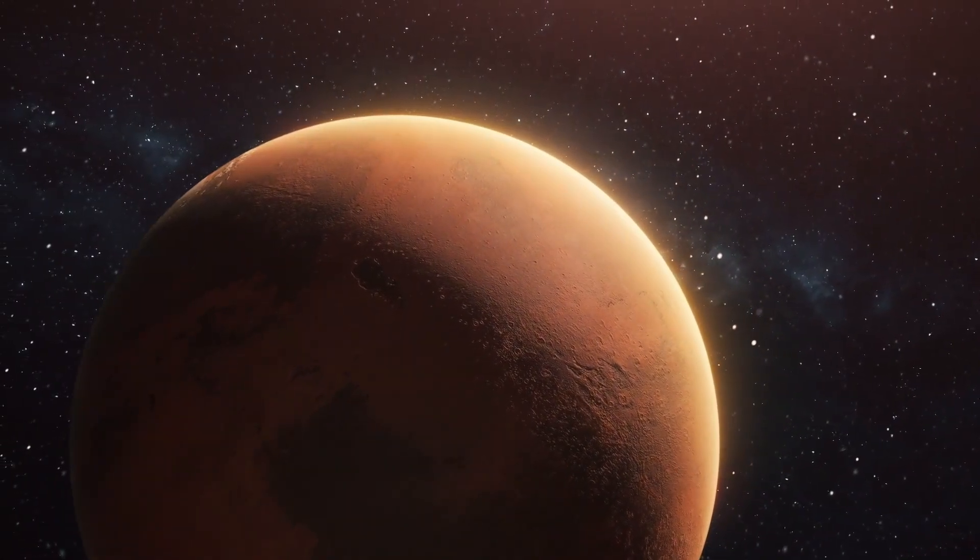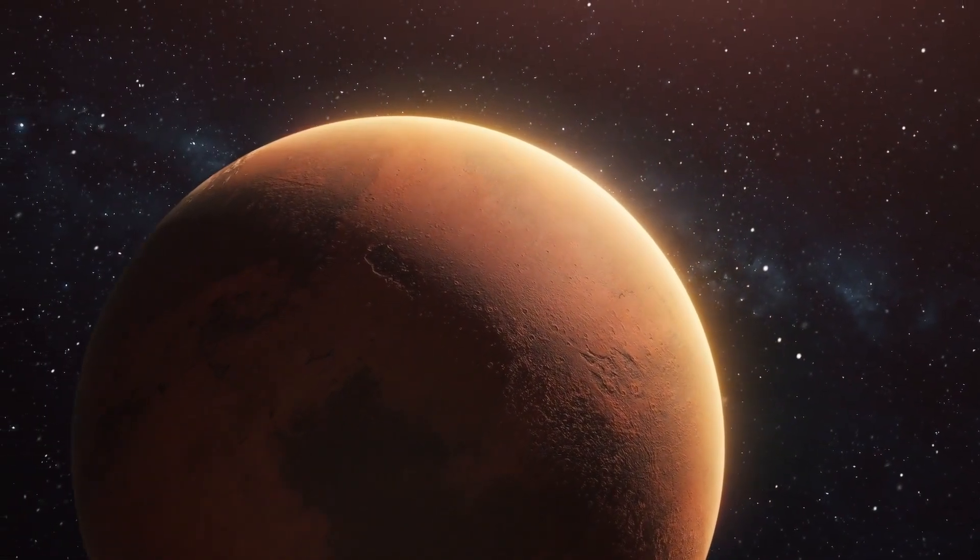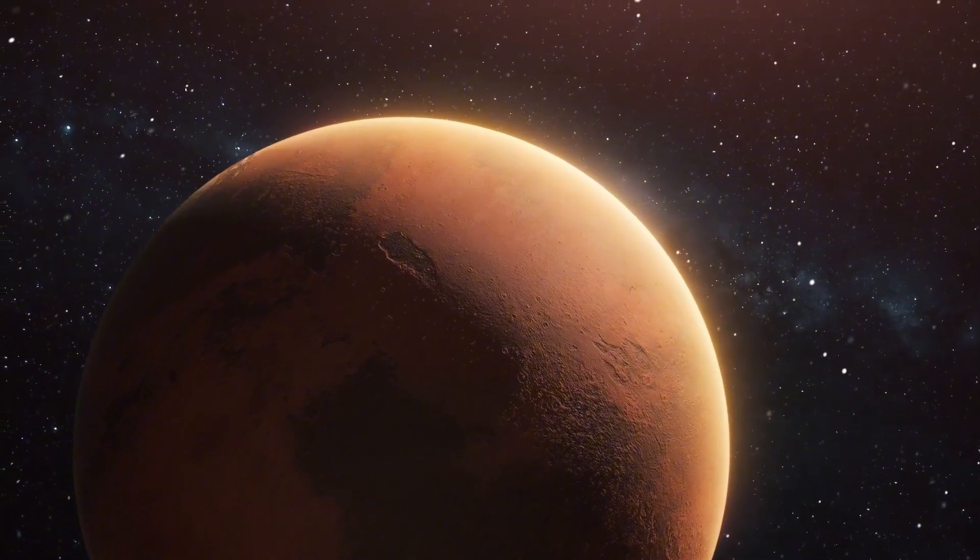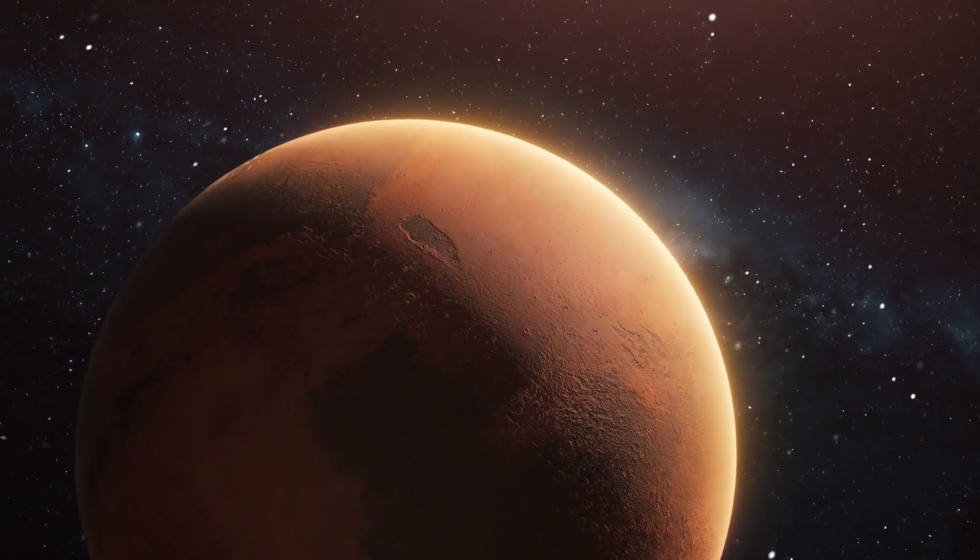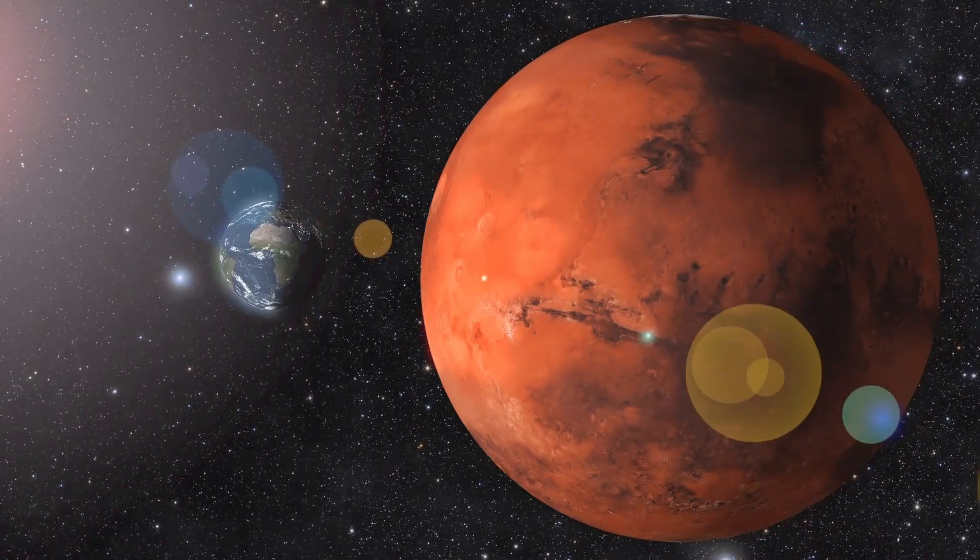While observing the closest star system to us, Proxima Centauri, which is only four light years away, scientists have noticed some peculiar anomalies from one of the planets in the system, Proxima b.